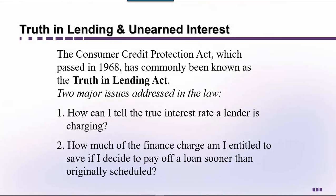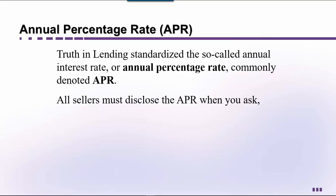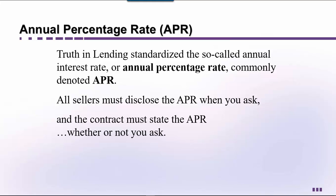The Truth in Lending Act also standardized the so-called annual interest rate, or APR. The rule is that all sellers must disclose the APR when you ask, and also the contract must state the APR whether or not you ask. This helps to prevent confusion, since the advertised interest rate might be given as compounded monthly or weekly, and we really want to know how much interest is going to be gathered as a percentage of the total amount each year.